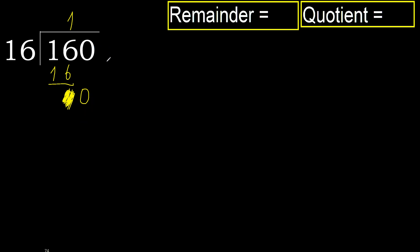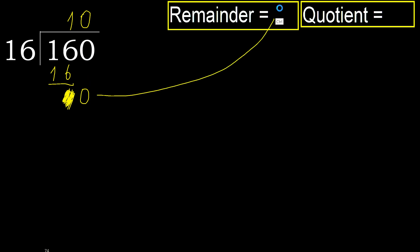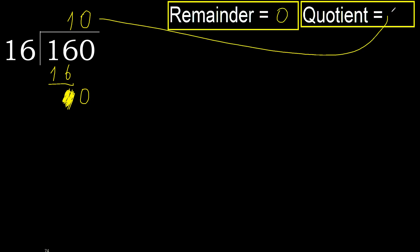That is not a number, therefore finish it — complete. Always complete with 0. Complete because here we finish with this number. 160 divided by 16 is 10.